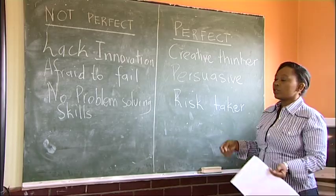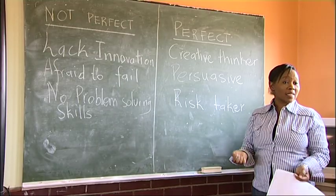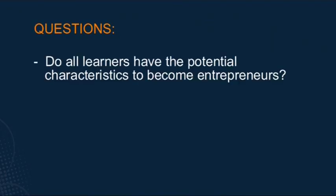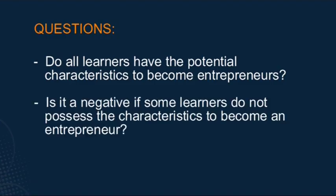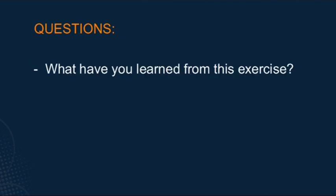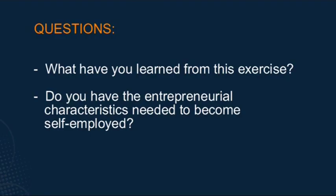As a summary, the teacher reviews both lists on the board or flip chart and facilitates a discussion with learners using the following questions: Do all learners have the potential characteristics to become entrepreneurs? Is it a negative if some learners do not possess the characteristics to become an entrepreneur? What have you learnt from this exercise? Do you have the entrepreneurial characteristics needed to become self-employed?